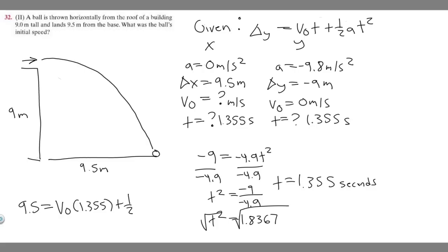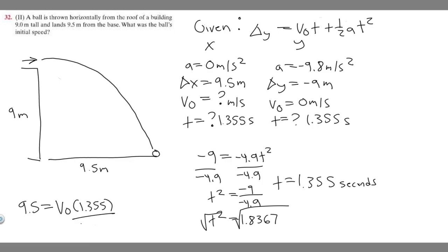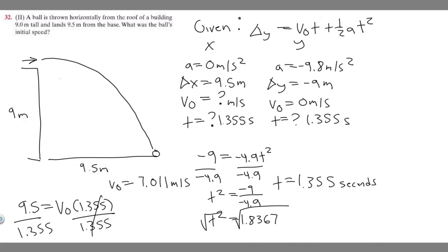Since acceleration in the x direction is zero, that whole term becomes zero and drops out. To solve for v sub zero, we divide both sides by 1.355: v sub zero equals 9.5 divided by 1.355, which equals 7.011 meters per second. Rounding to the whole number, v sub zero equals 7 meters per second. So the ball's initial speed is 7 meters per second.